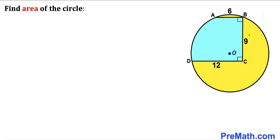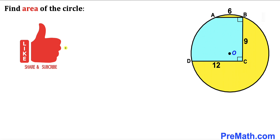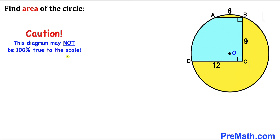Welcome to PreMath. In this video we have a circle with center O, where chord AB is 6 units, line segment BC is 9 units, and line segment CD is 12 units. Moreover, these angles are 90 degrees each, and our task is to calculate the area of this given circle. Please keep in mind that this figure may not be 100% true to scale.